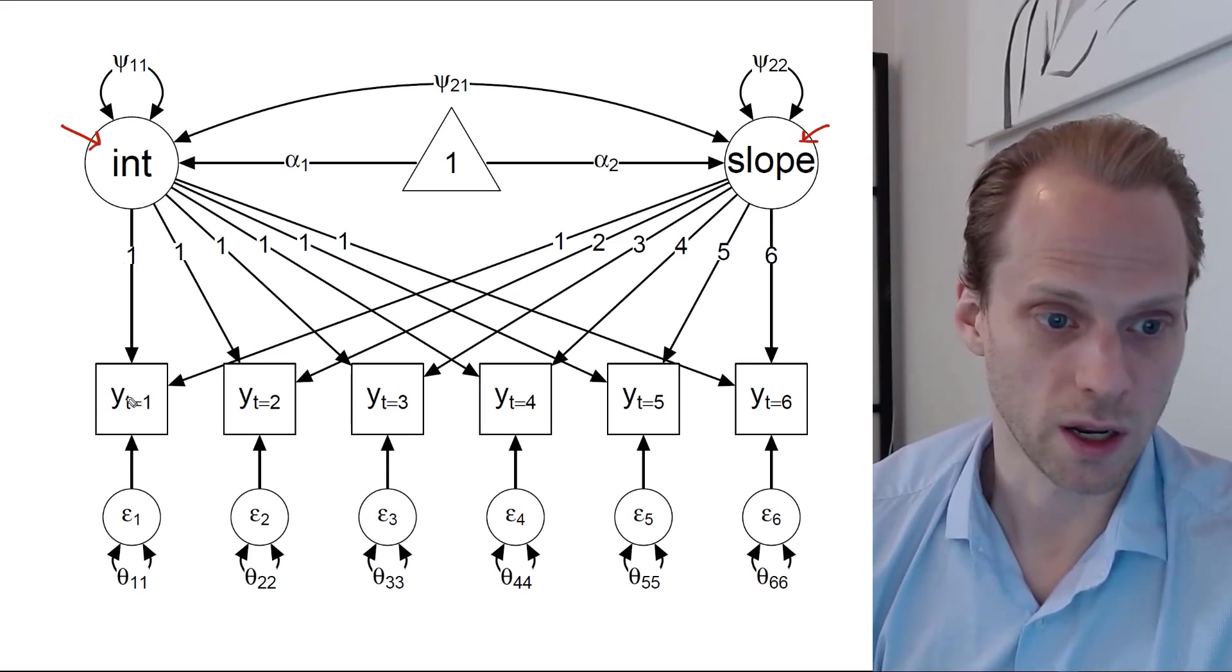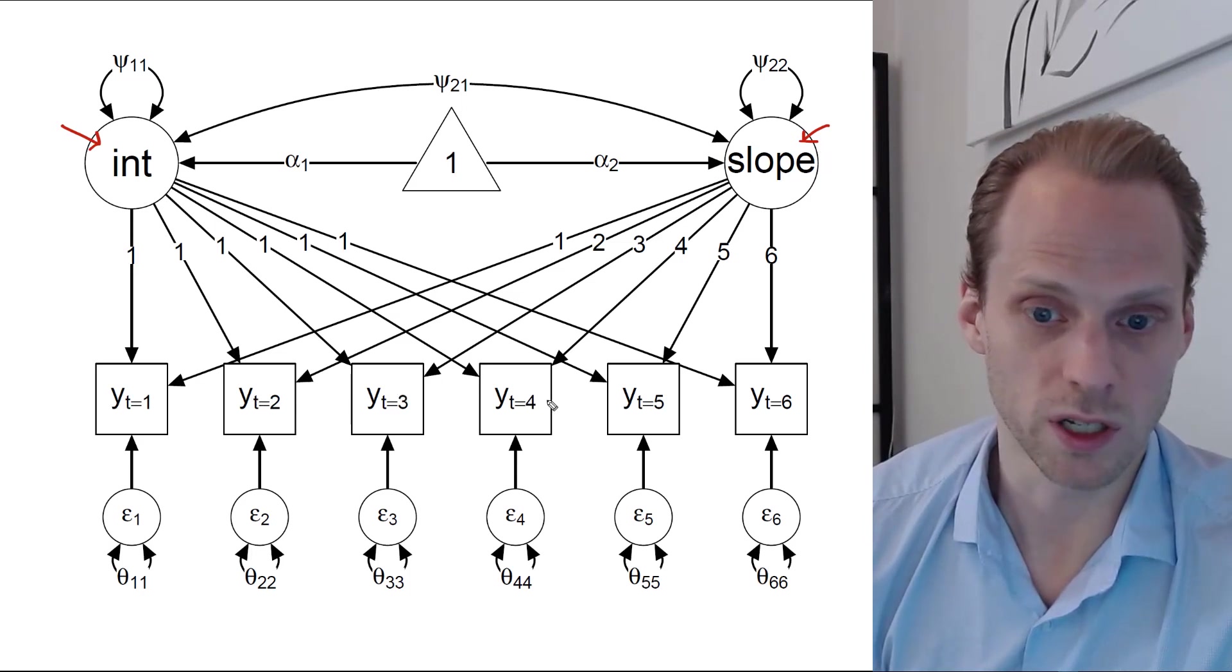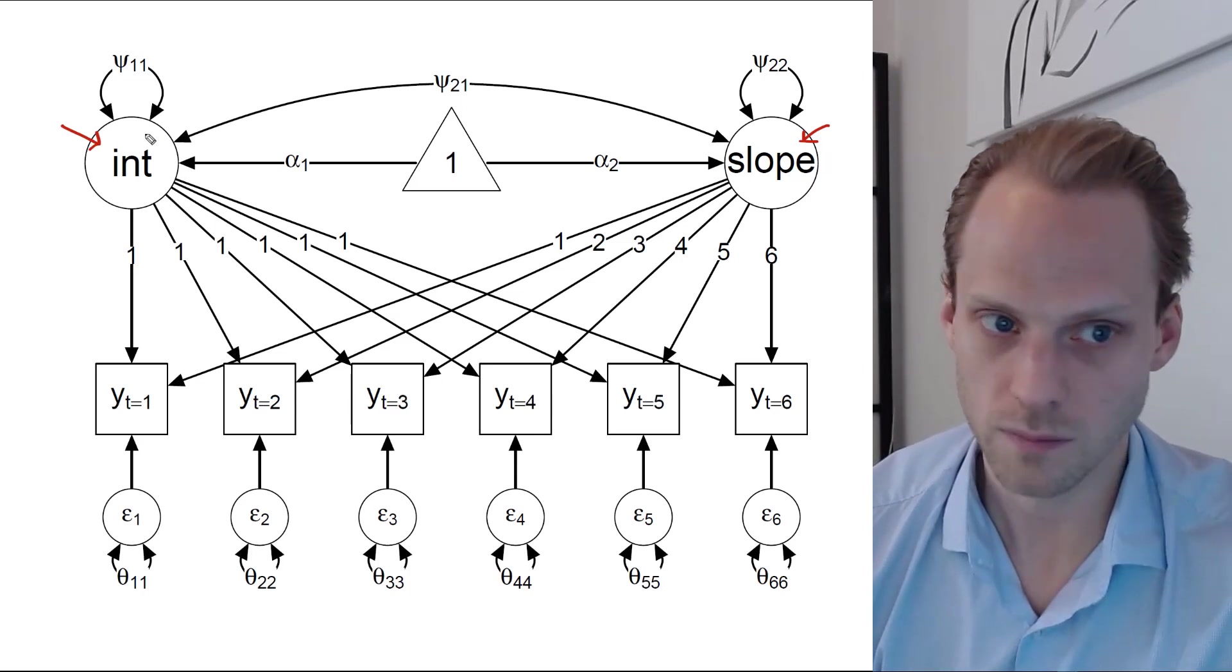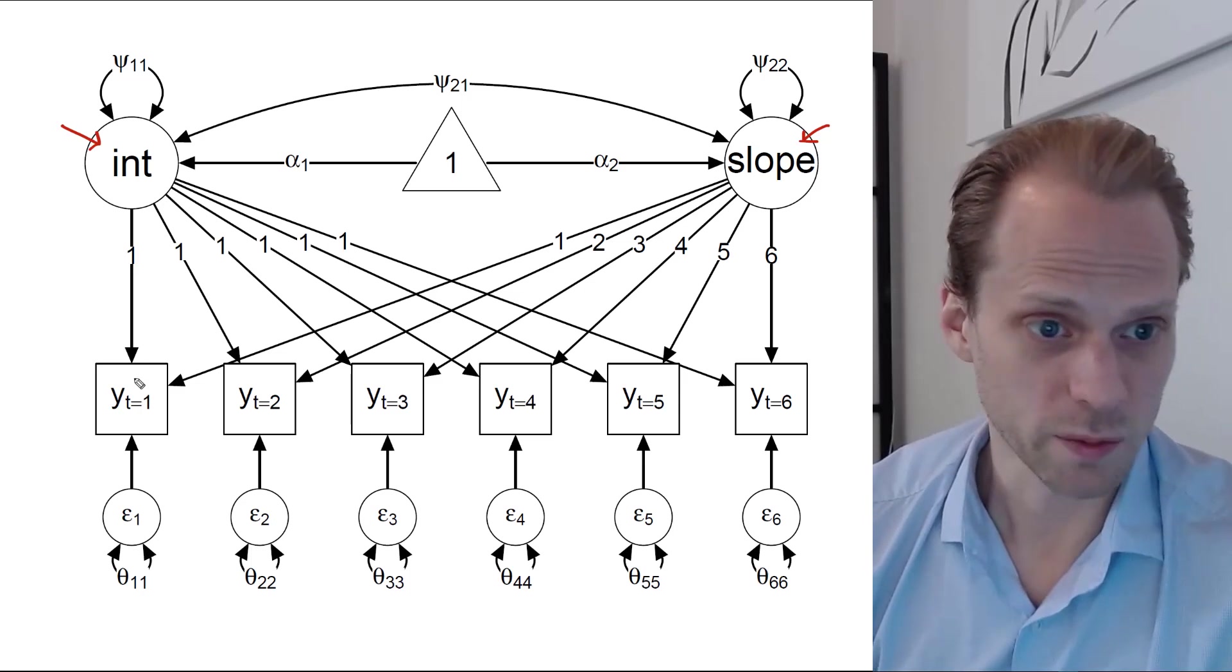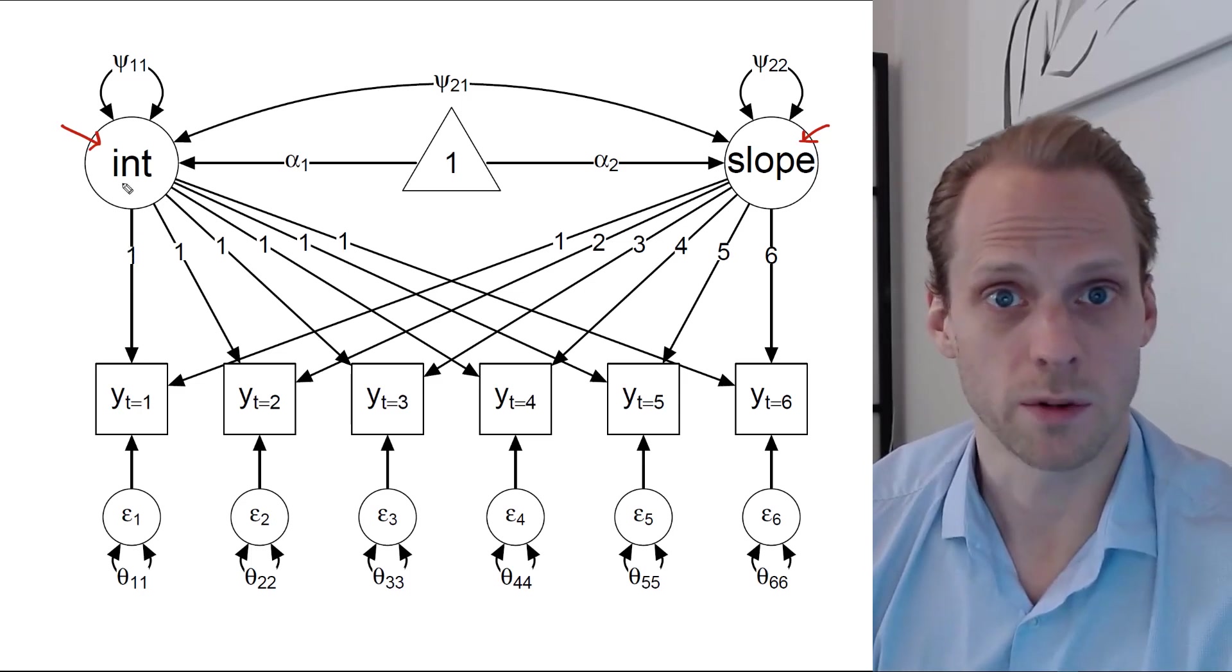Then for the intercept, we know that every measurement, this is t1, t2, t3, t4, t5, t6. Every measurement has simply one times an intercept. So it just simply has an intercept.